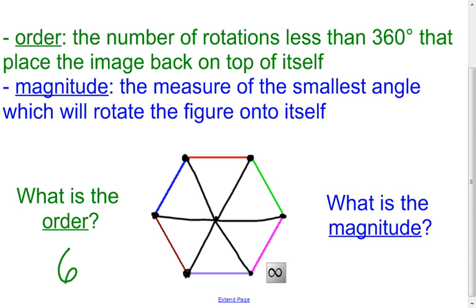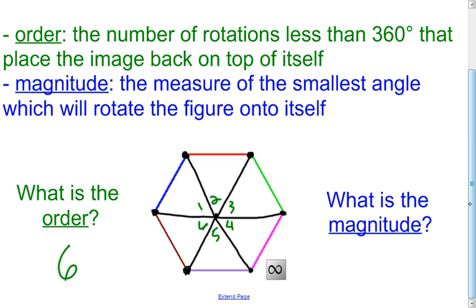Now I look at this and I go, well, I have one, two, three, four, five, six angle measures in there, which is going to help me calculate the magnitude. Because if I were to add up all six of those angles, it would equal 360 degrees. Well, if I take 360 divided by the six angles that are in there, I'm going to get a 60 degree angle. So the magnitude for this regular hexagon is 60 degrees.